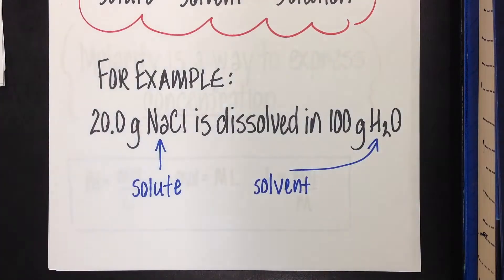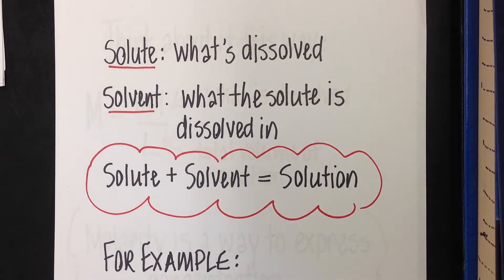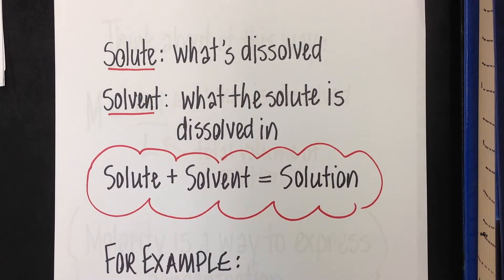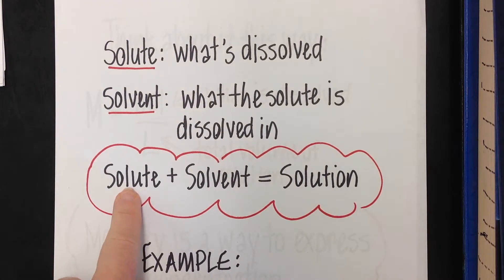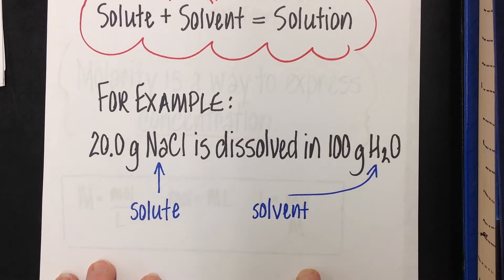Let's look at some basics of molarity before we get into problems. The solute is what is dissolved — the substance you are taking and dissolving, usually in water. Water is the universal solvent, meaning it's very common, but it doesn't have to be water. The solvent is what you dissolve the solute in, and when you put the solute in the solvent, the result is the solution. For molarity, we look at how much solute is dissolved in the total amount of solution.